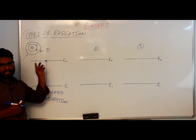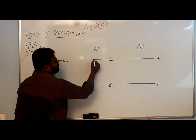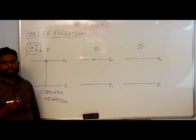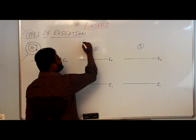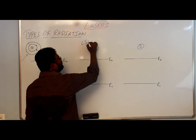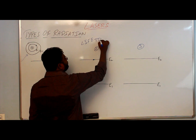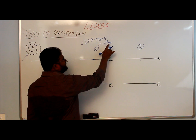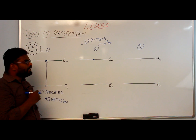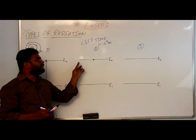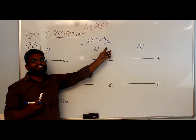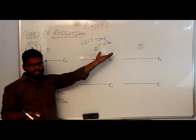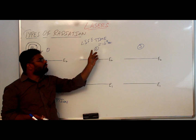Now the second type of radiation. The electron in the excited state will never stay there forever — it spends some amount of time called the lifetime. The lifetime of an electron in the excited state is about 10⁻⁸ seconds on average. It depends on the material — it may be 10⁻³ seconds, sometimes 10⁻¹¹ seconds — it depends on the material and the energy of the orbit.